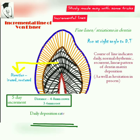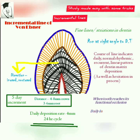The distance traveled is 4 to 8 micrometers in the crown and 3 to 6 micrometers in the root. The daily deposition rate is 4 micrometers, representing a 24-hour mineralization cycle. When the tooth reaches its functional occlusion on eruption, the daily increment decreases.